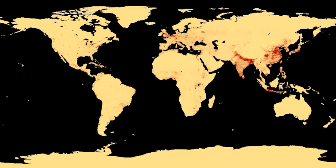In ecology, the population of a certain species in a certain area can be estimated using the Lincoln Index.